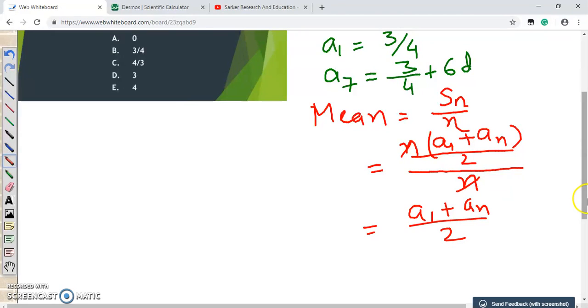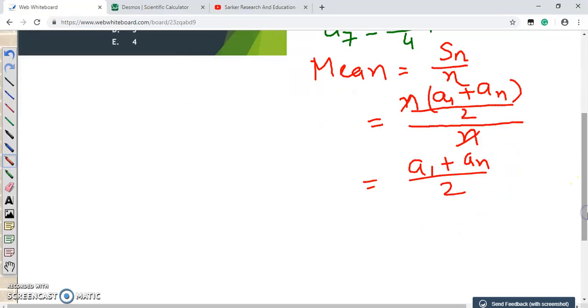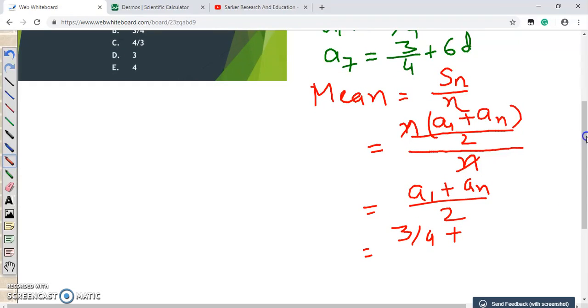And we are left with (a1 plus an) by 2. What is our a1? Our a1 is 3/4. What is our an? An means the a7th term. We already figured it out. So it is 3/4 plus 6D. And that should be divided by 2.